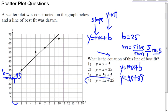So answer choice 4 is my answer. Remember, when you pick points, you can't pick this point right here — it has to be a point that is on the trend line. You can't pick random points off the trend line because you're getting the equation of the trend line.